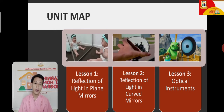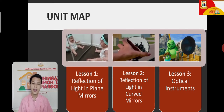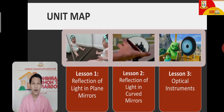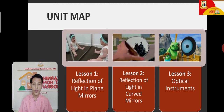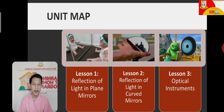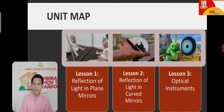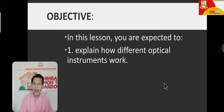Now we will go to lesson number 3, which is the application of lessons 1 and 2. It is all about optical instruments. You will learn how the different types of mirrors can be used to view the desired appearance of an object. For this lesson number 3, we have only one objective: explain how different optical instruments work.